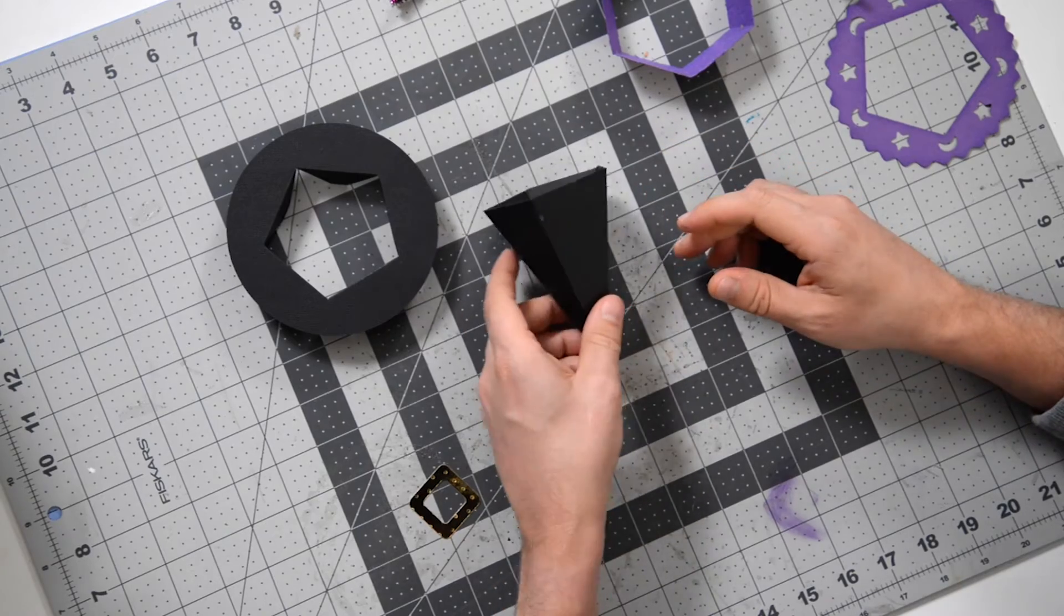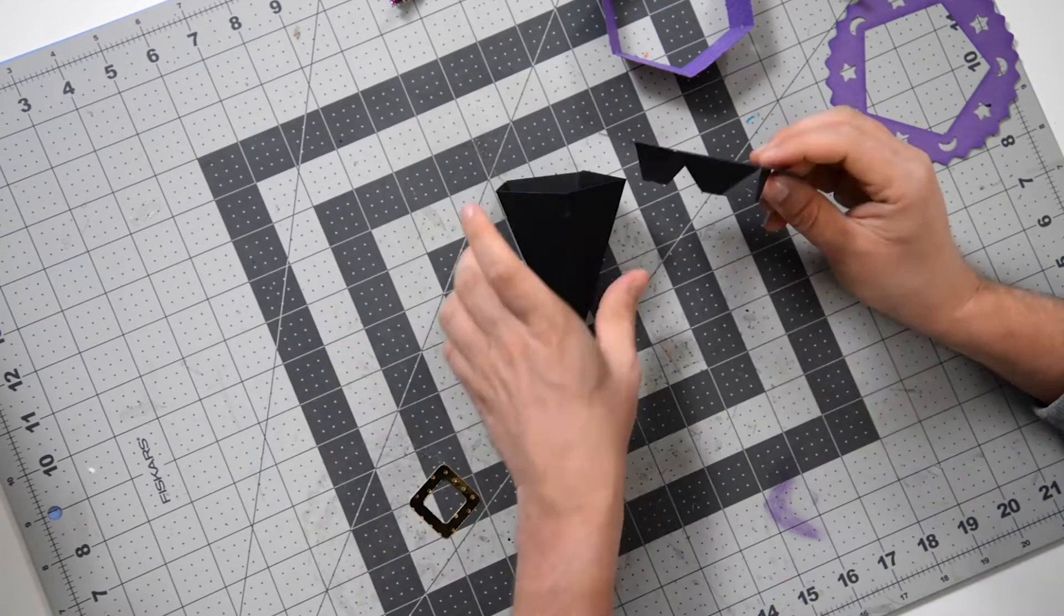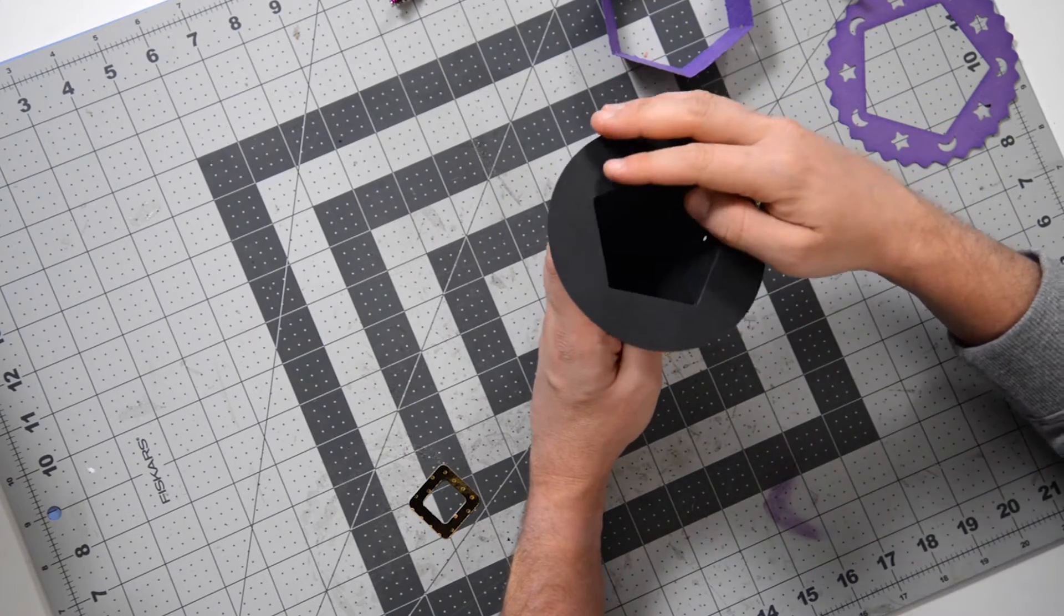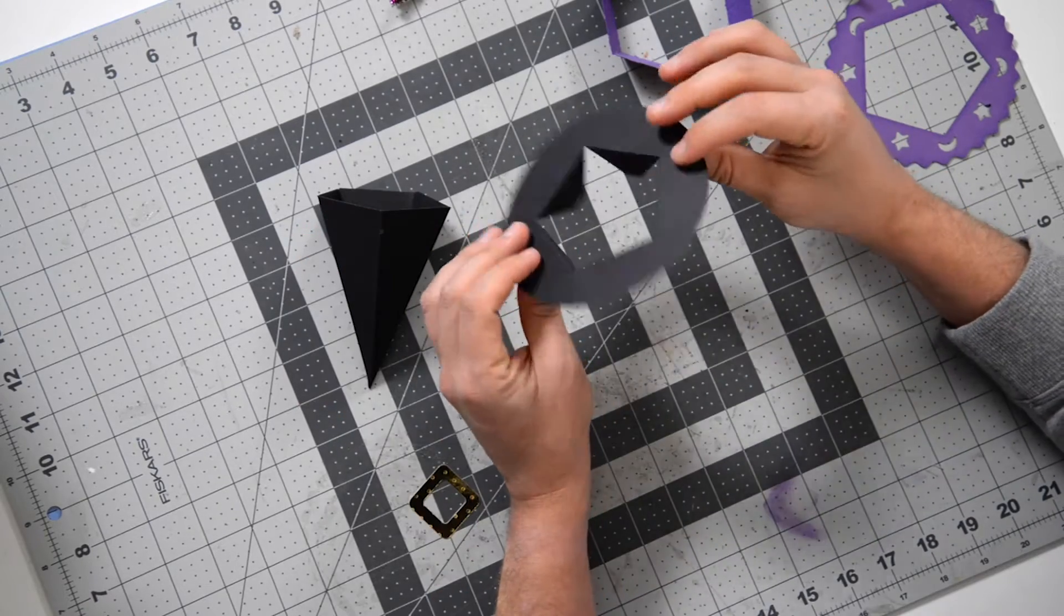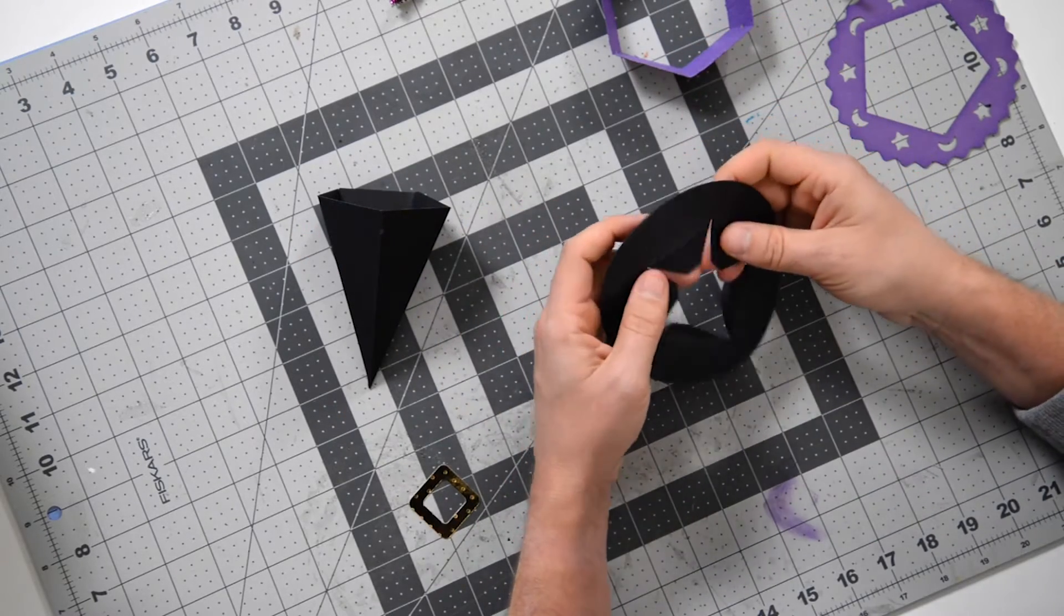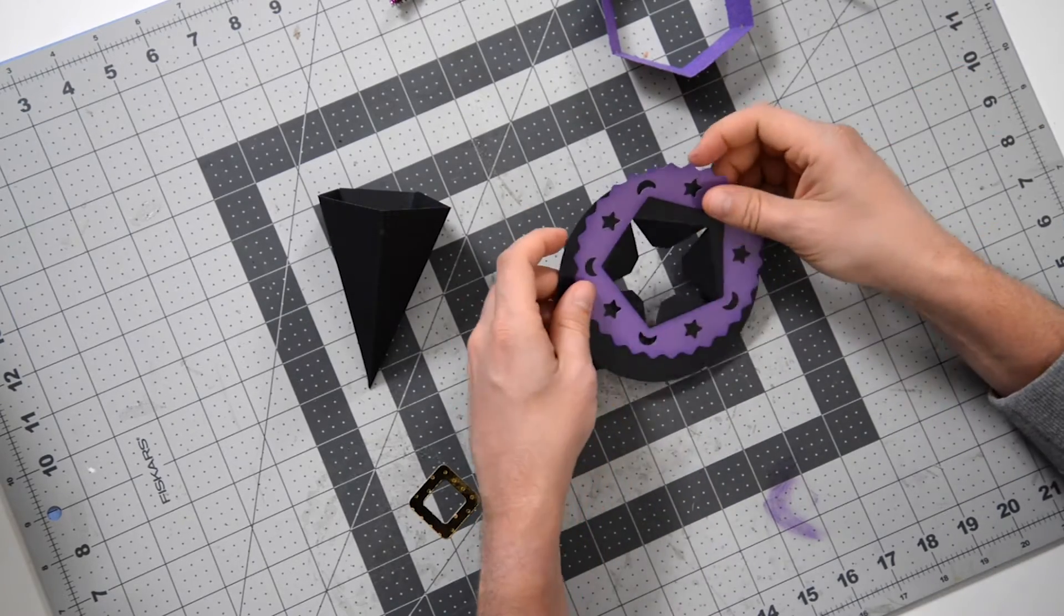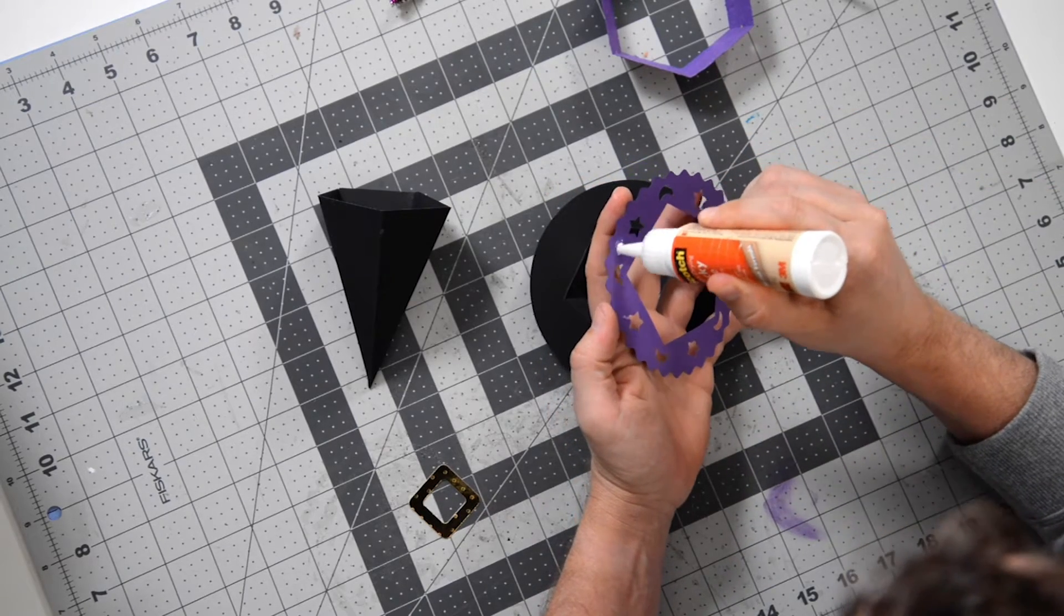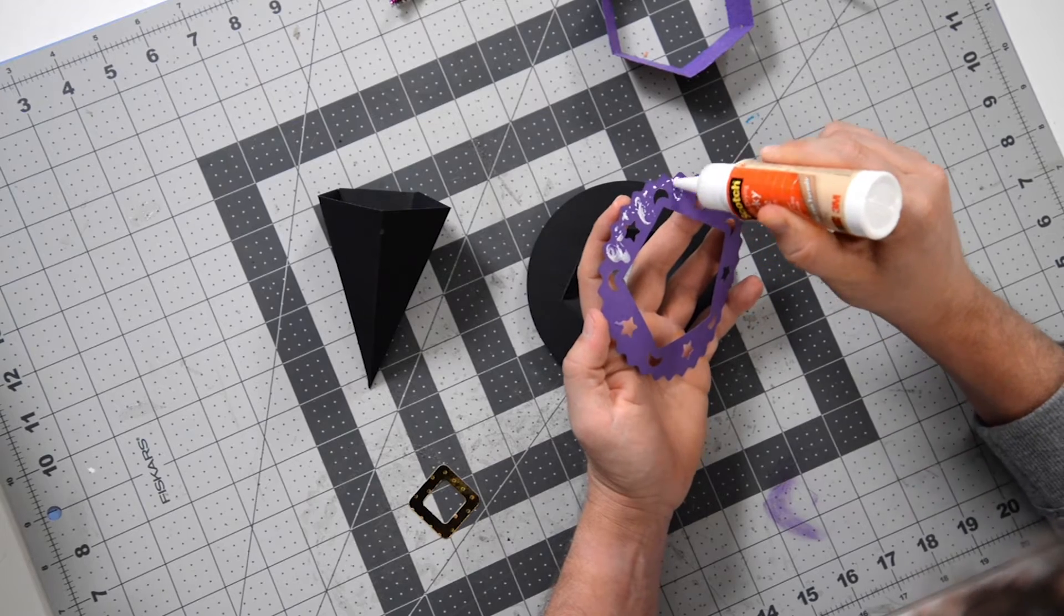So there we go. And now what we can go ahead and do is we're going to take the brim of the hat and we're going to connect that to the piece like this. So you'll notice that there are some tabs here. We're just going to, actually you know what, before we do that, let's take this decorative piece. I went ahead and I inked this with a little bit of purple ink since I'm using purple paper and let's just get this on there while it's flat. It'll be easier.